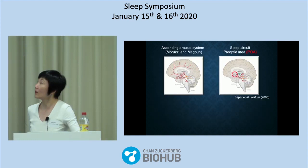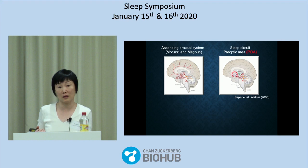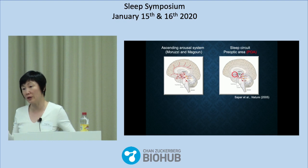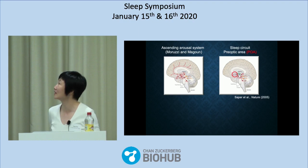Pioneered by Moruzzi and McGinn, who discovered the ascending arousal system, we know a lot about the wake system. These include the monoaminergic neurons, the cholinergic neurons, and some peptidergic neurons, the most important one being the hypocretin system.